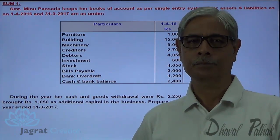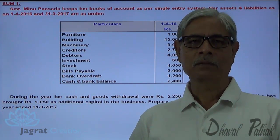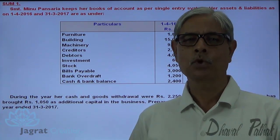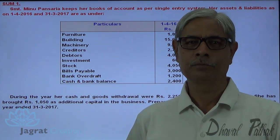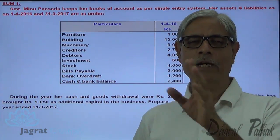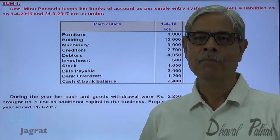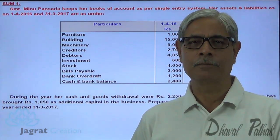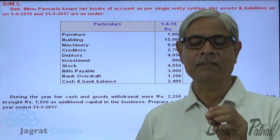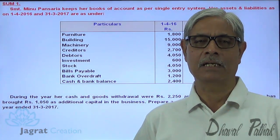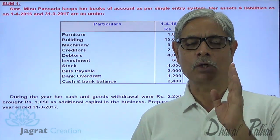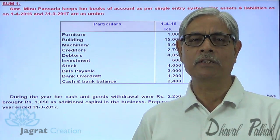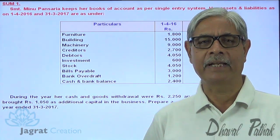In this method — the capital comparison method or net worth method — no books of accounts are maintained. No transactions are recorded on a regular basis. I don't need any information about cash transactions, bank transactions, credit sales, cash sales, credit purchases, or cash purchases.